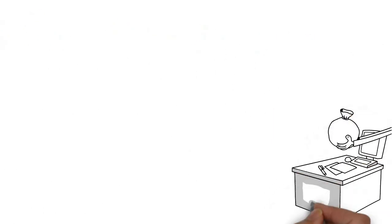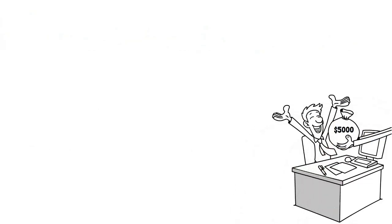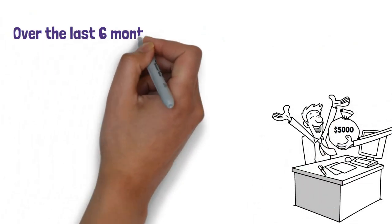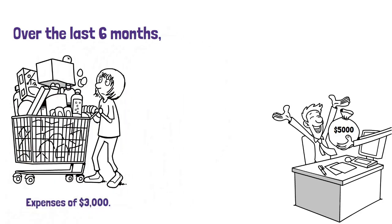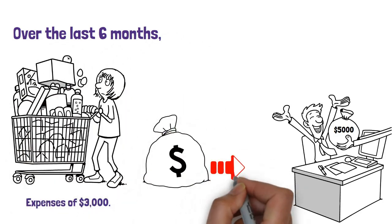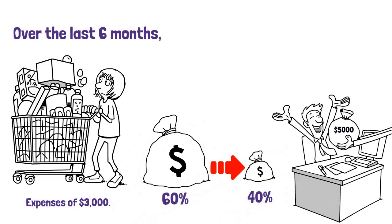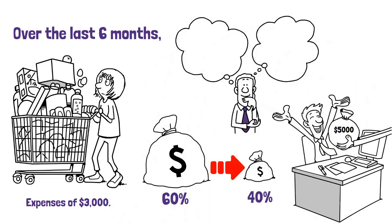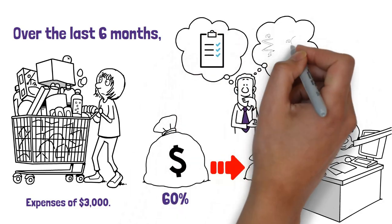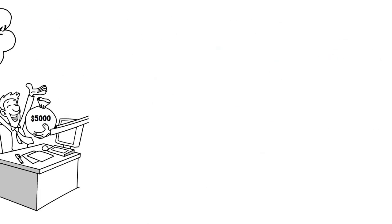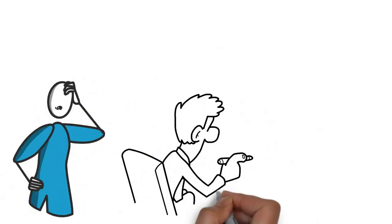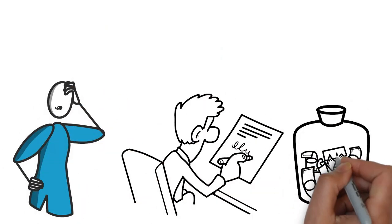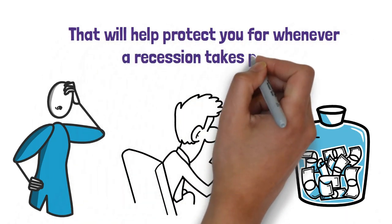Let me share an example to explain further. So let's say you earn $5,000 a month after taxes and over the last six months you've averaged expenses of $3,000. In this case, you would set your split budget to be 60% spending and 40% saving. There are no complicated cost categories, no formulas to remember, nothing. Just determine how much you could spend, and as long as you track your spending to that amount, you'll easily save money that will help protect you for whenever recession takes place.